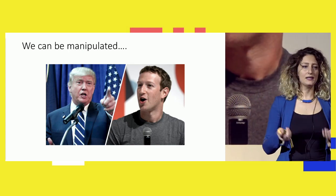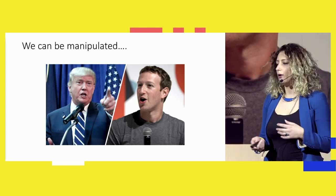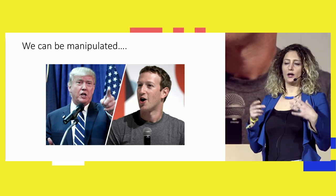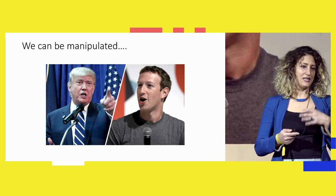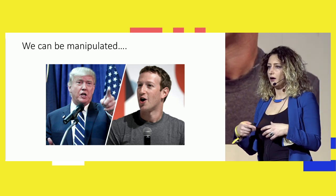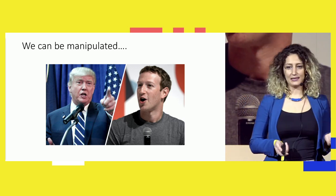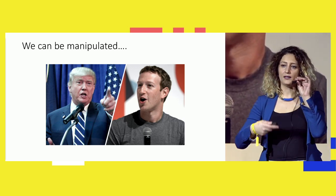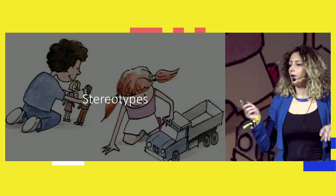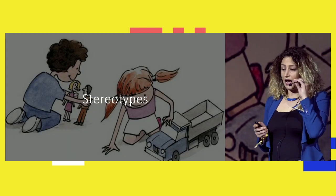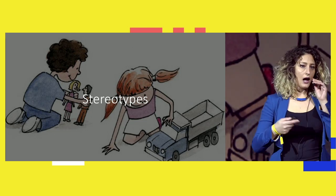The danger of bias in algorithms and in AI is that we can be manipulated. We can be shown content that might change the way we think and make us choose something over another. There are claims that the reason Trump was elected was because of the content displayed to users on Facebook. Algorithms are also reflecting existing stereotypes in our society.